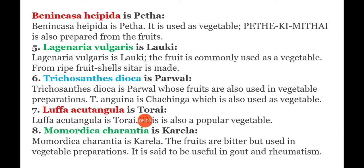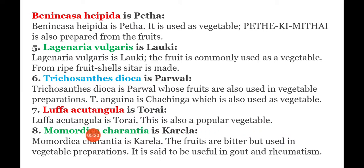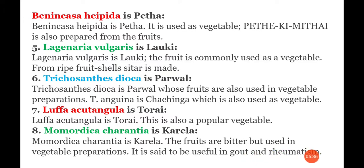Luffa Aquitangula, known as Turai in Hindi, is a popular vegetable. Momordica Karantia, known as Karela in Hindi, is used as a vegetable despite its bitter taste. It is said to be useful in gout and rheumatism, and is also used for diabetic patients.